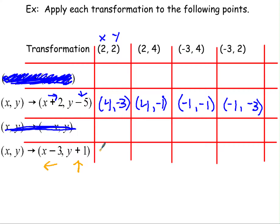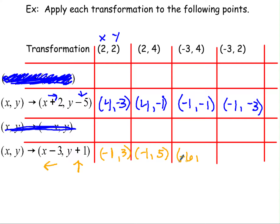Go ahead and fill out the rest of this table — pause the video if you need to. For (2, 4): two minus three is negative one, and four plus one is five, giving (-1, 5). Then we get (-6, 5) and (-6, 3) for the remaining points.